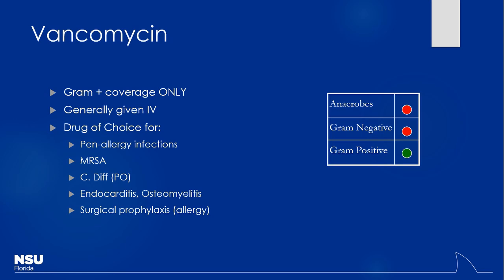Regarding metronidazole for rosacea topically — you don't get systemic resistance from topical use because only local actions occur. Also, the concentrations achieved topically are so high that even if resistant, you can typically overcome it. If you tried to achieve those concentrations systemically by giving IV, you would probably kill the patient.